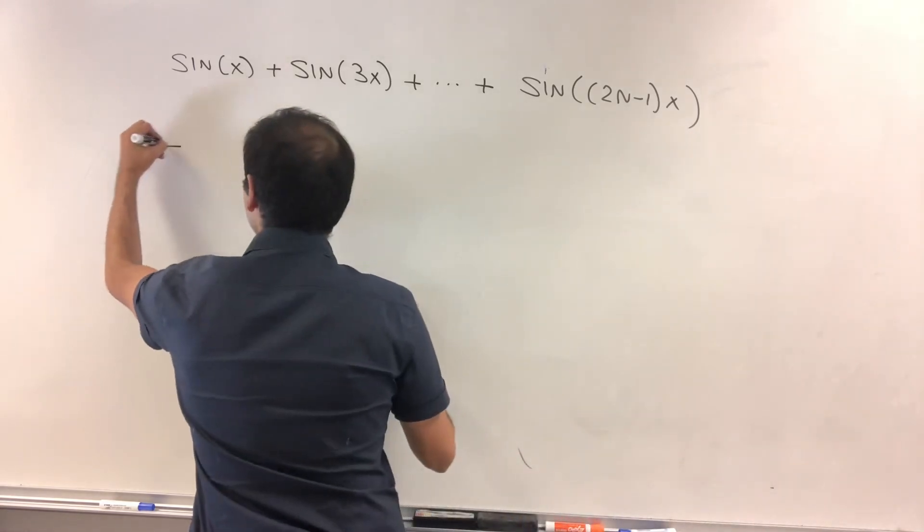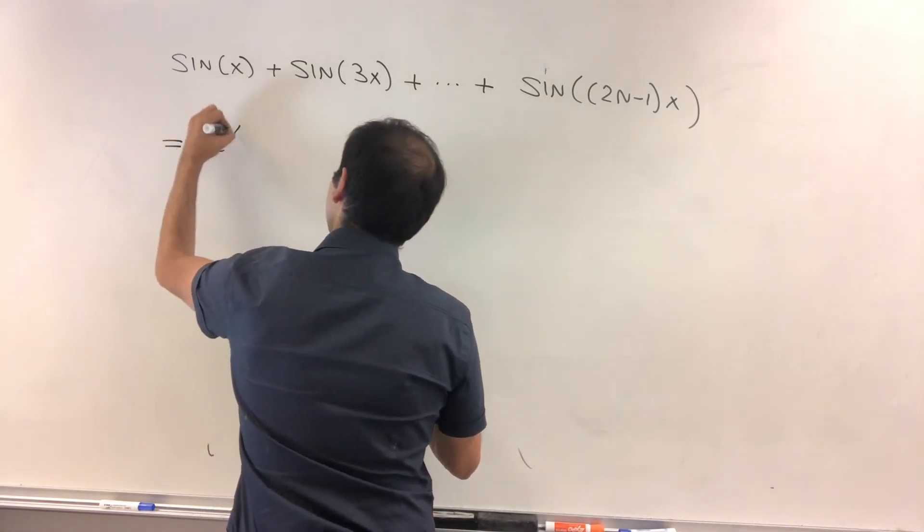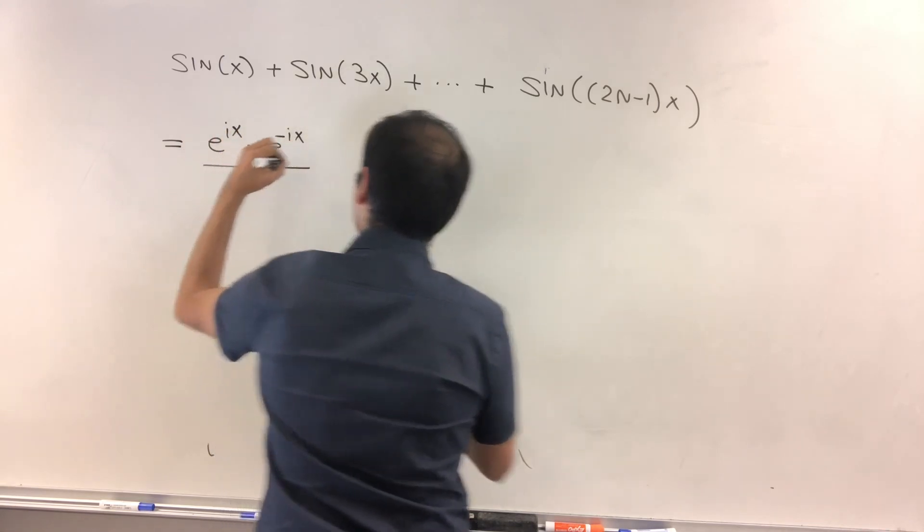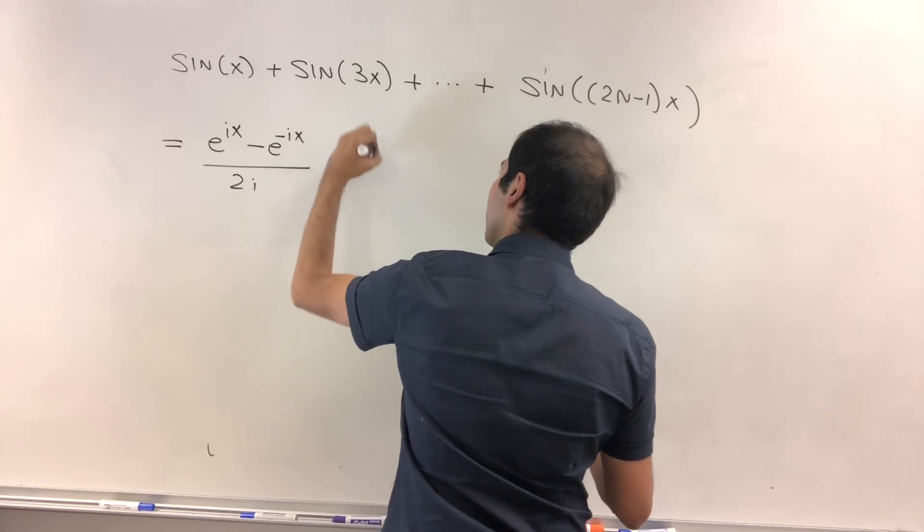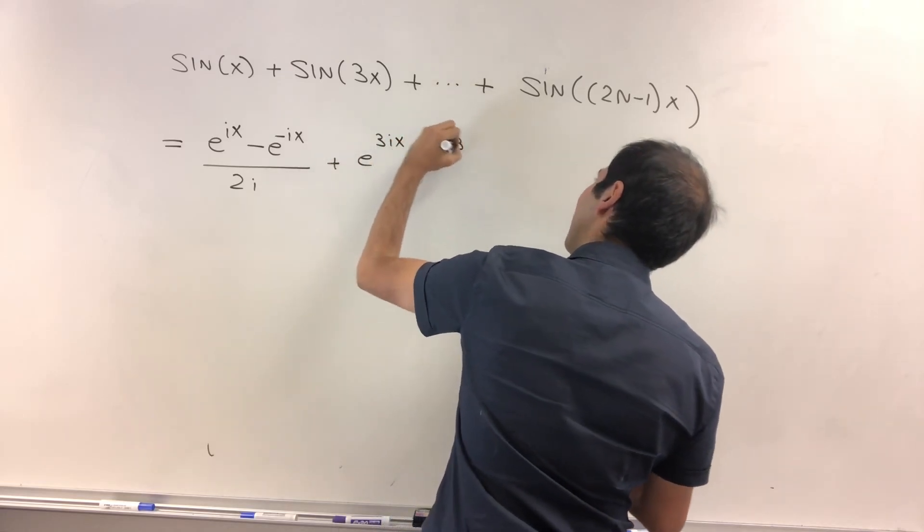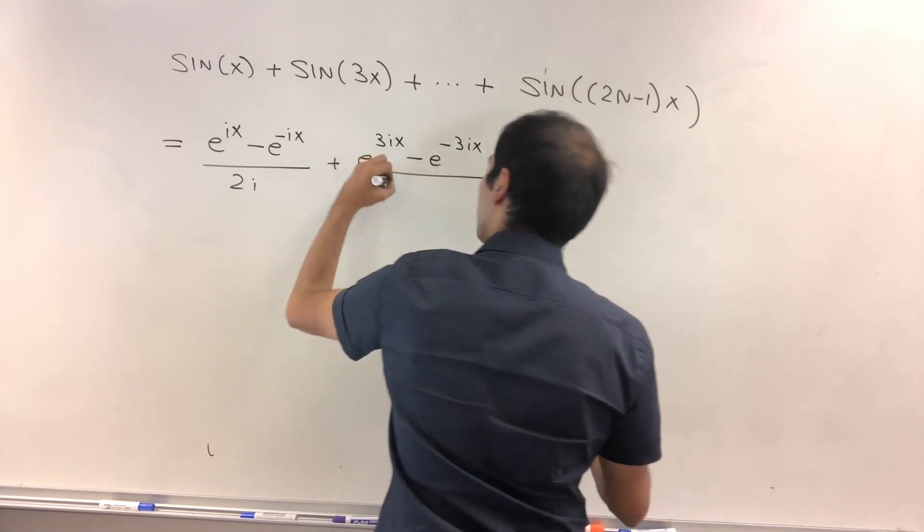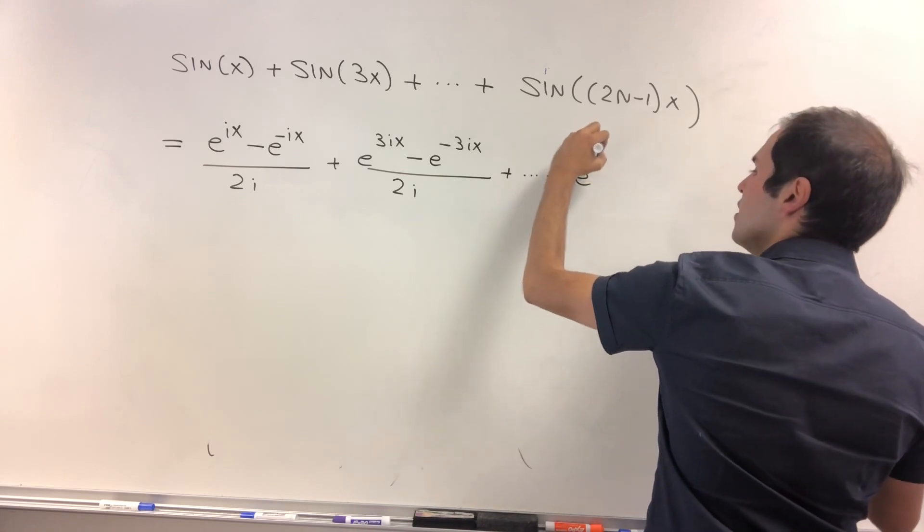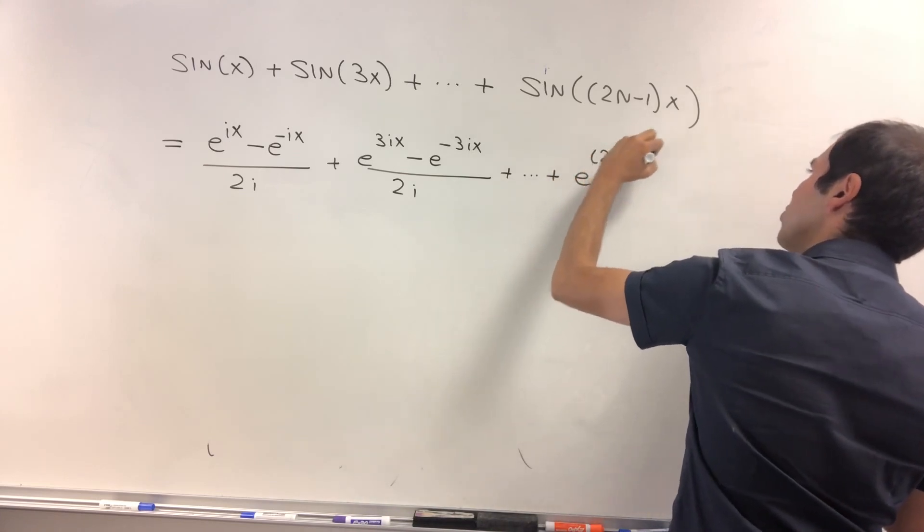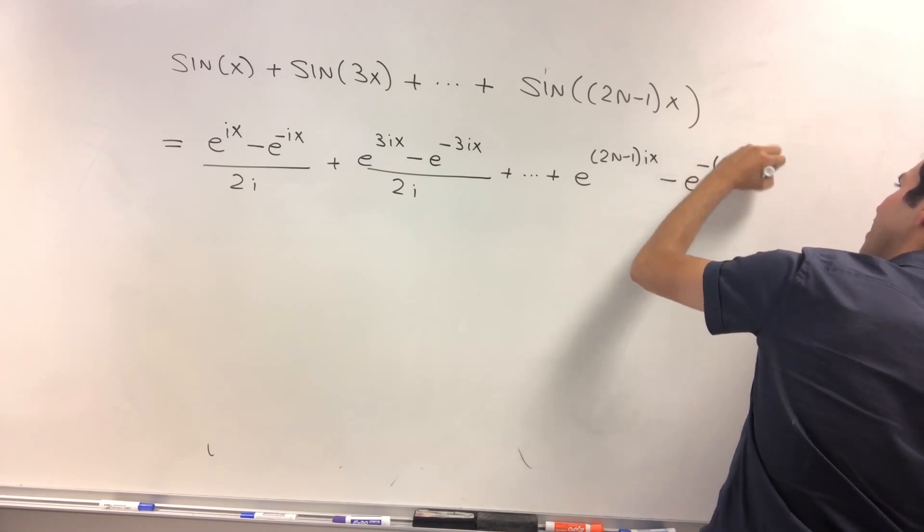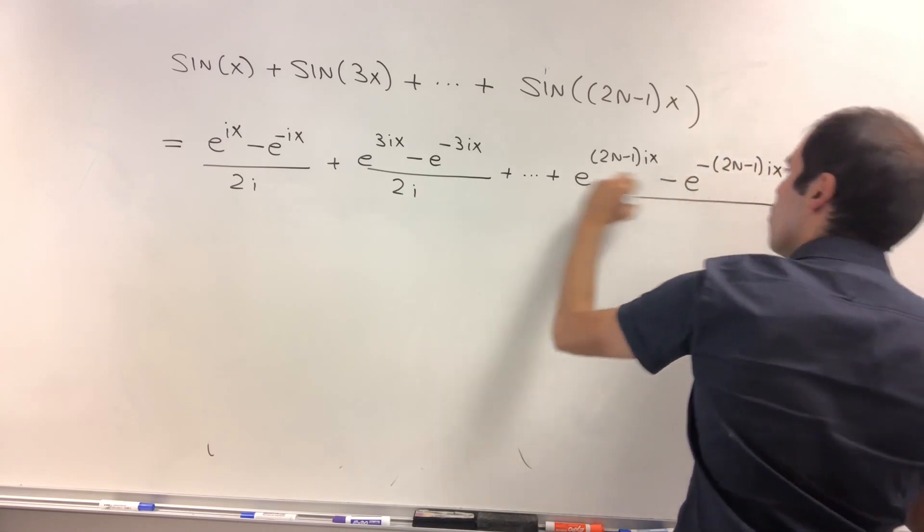Because what is sine of x? It's the same thing as e to the ix minus e to the minus ix over 2i. Sine of 3x is e to the 3ix minus e to the minus 3ix over 2i, etc., up to e to the 2n minus 1ix minus e to the minus 2n minus 1ix over 2i.